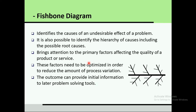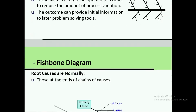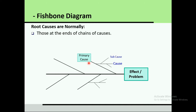The fishbone diagram can provide initial information to later problem-solving tools. Root causes are normally those at the end of chains of causes. For example: effect/problem is at one end, then primary causes, then causes, and then sub-causes. Sub-causes do not have any further sub-causes beneath them. We will have examples later so you can understand the difference between cause, sub-cause, and primary cause.